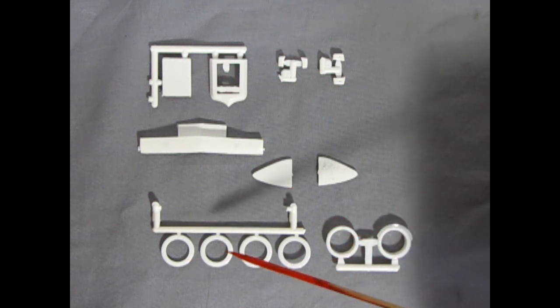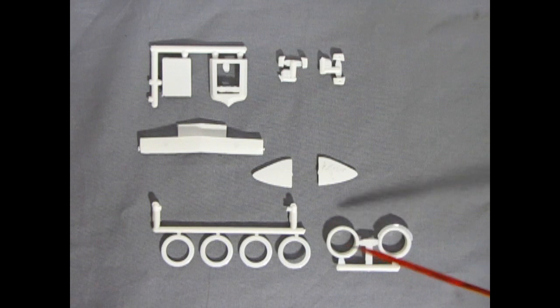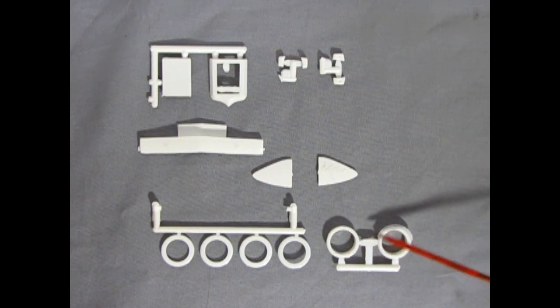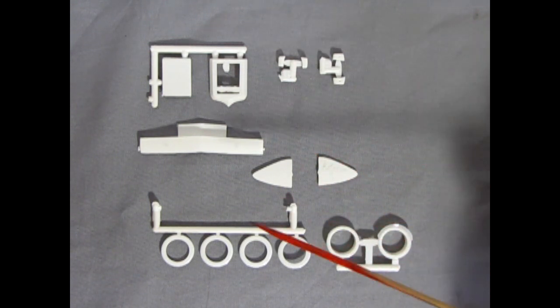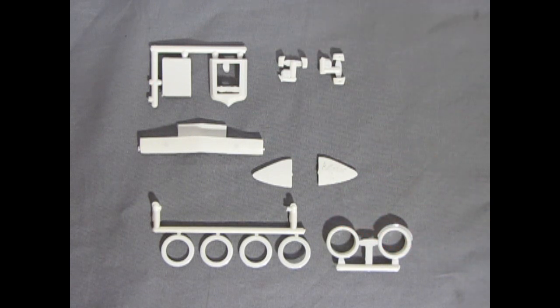Then we have our wheel backs and our bigger wheel backs. Again you can see the flash on here. But overall they're nice and smooth. There are mold marks on the other side which of course you got to get rid of with your number 16 hobby blade or some sandpaper.